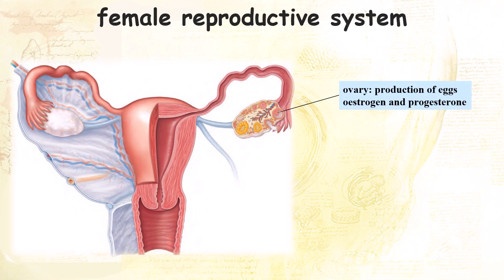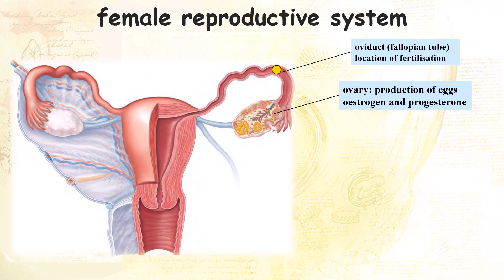Females have a pair of ovaries on both sides. They produce eggs and also secrete female hormones. An egg is released into the oviduct, or fallopian tube. Peristalsis of the oviduct and cilia, similar to those found in the trachea, help to move the immobile egg along the oviduct. The oviduct is also the site where fertilization occurs.